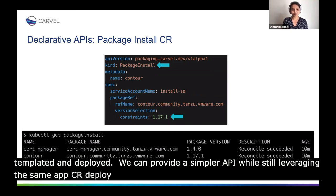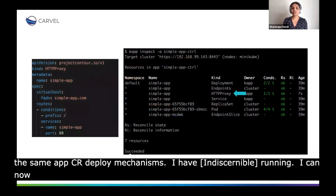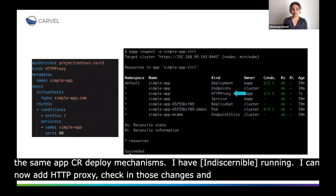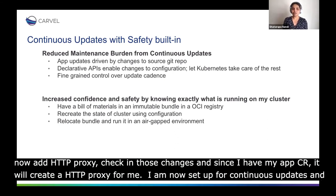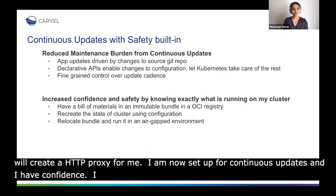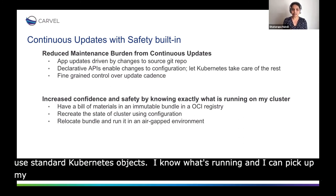After my package install succeeds, I have Contour running. I can now add an HTTP proxy provided by Contour to my simple app, checking those changes into my Git repo. Since I have my App CR watching for changes to my Git repo, it will create an HTTP proxy for me. I am now set up for continuous updates and I have confidence in what's running on my cluster. I can drive updates to my App with changes to the Git repo, make changes using standard Kubernetes objects, and I know what's running is locked down to the contents of an immutable bundle. I can pick up my configuration and recreate the same state on any Kubernetes cluster, including in an air-gapped environment.